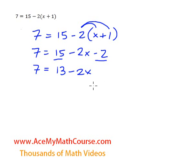Now what do we do? Well, we want to isolate x. And to do that, we'll just subtract 13 from both sides of the equation.